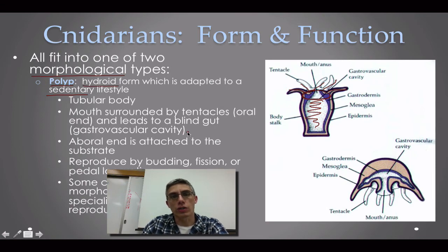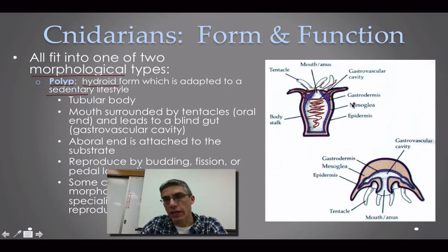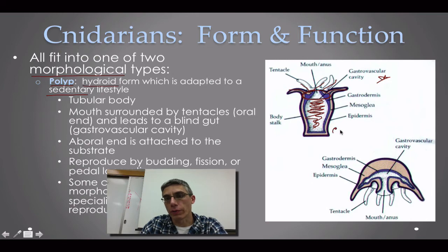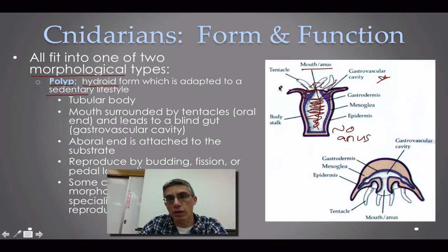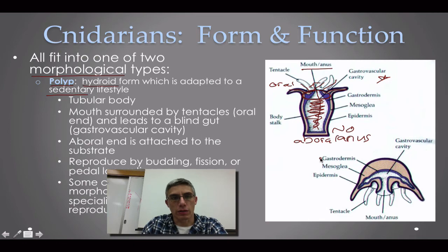The mouth leads to what we call a blind gut — the gastrovascular cavity — which is blind because there is no anus. Any waste material produced inside the animal is sent back up and released through the mouth, which is why it's labeled mouth/anus. The aboral end is attached to the substrate, so the top is the oral end and the bottom is the aboral end of the animal.